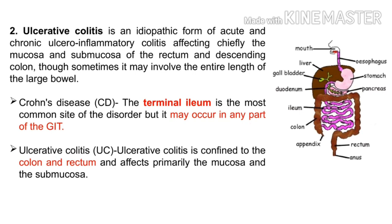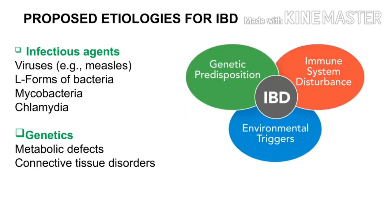What is Ulcerative Colitis? This is an idiopathic acute chronic inflammation. It involves the mucosa and submucosa. There is also ulcerative colitis affecting the colon and rectum, involving the submucosal and mucosal layers.